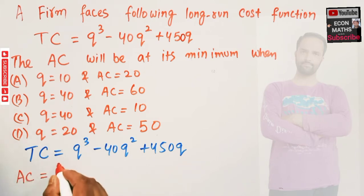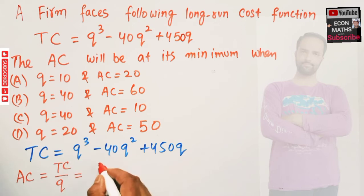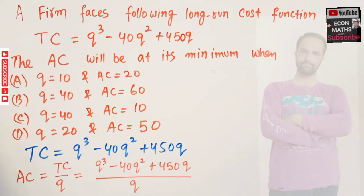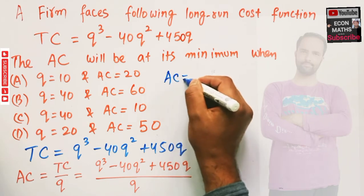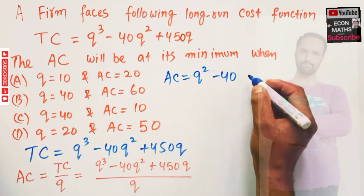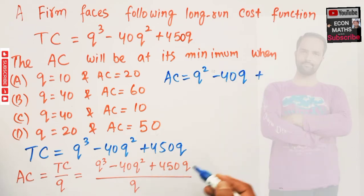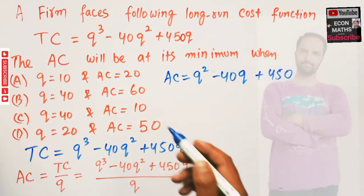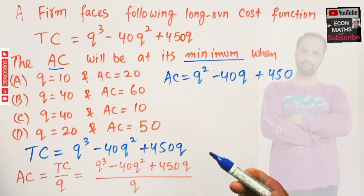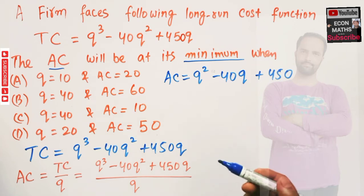Average cost is simply equal to total cost divided by output. So dividing the expression by Q: we have Q cubed minus 40Q squared plus 450Q, divided by Q. That gives us average cost equal to Q squared minus 40Q plus 450. This is our average cost function.